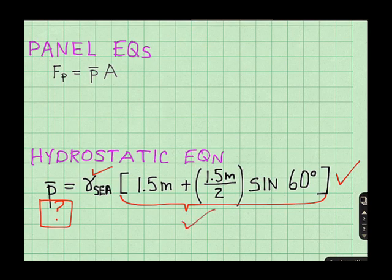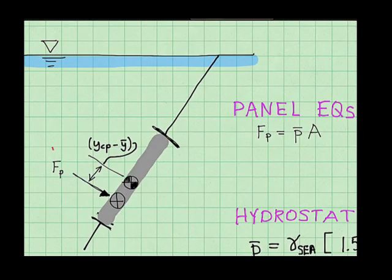So now I can solve for p bar, and then I can go back and solve for my first goal, the pressure force on the panel. To summarize, I found a way to solve for this goal. Next, I need to find this distance. The distance from the center of pressure to the centroid.